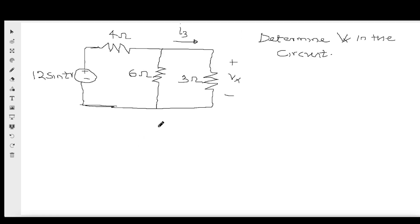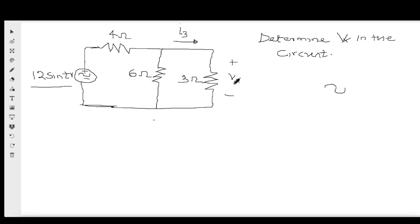Here is an example to illustrate voltage division. We have a sinusoidal voltage source 12sin(t) V, a 4Ω resistor, and a 6Ω and 3Ω in parallel. The voltage on the 3Ω is designated Vx. Since 6Ω and 3Ω are in parallel they have the same voltage, so the voltage on their combination is also Vx. To find Vx we first combine 6Ω and 3Ω so we can apply voltage division with the 4Ω.